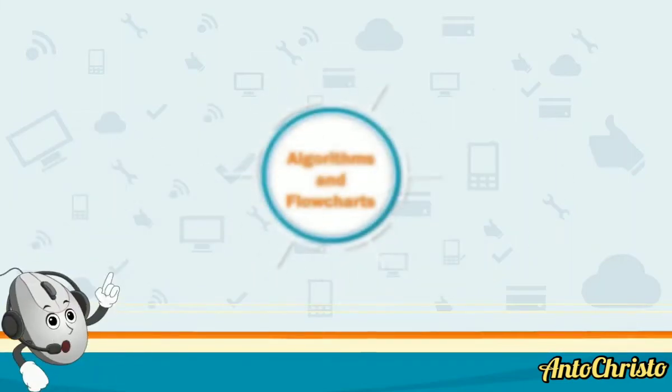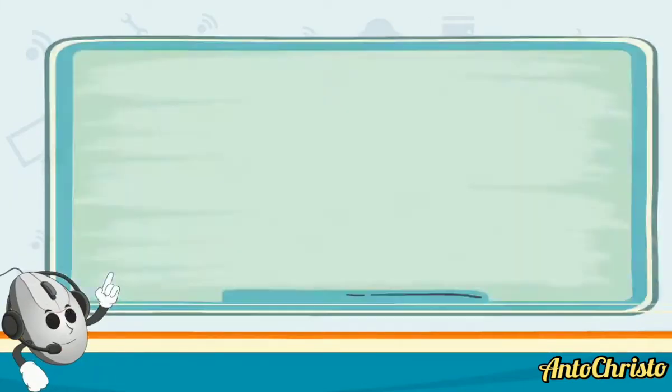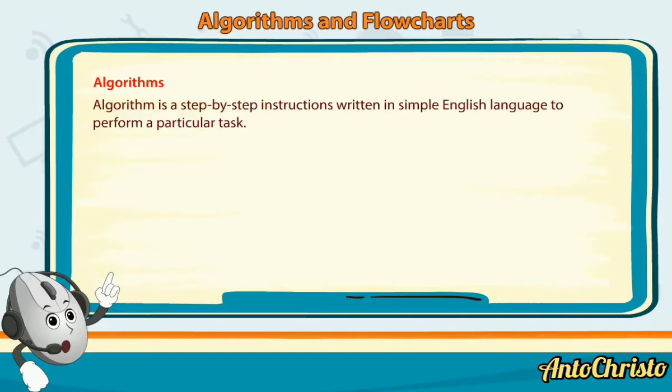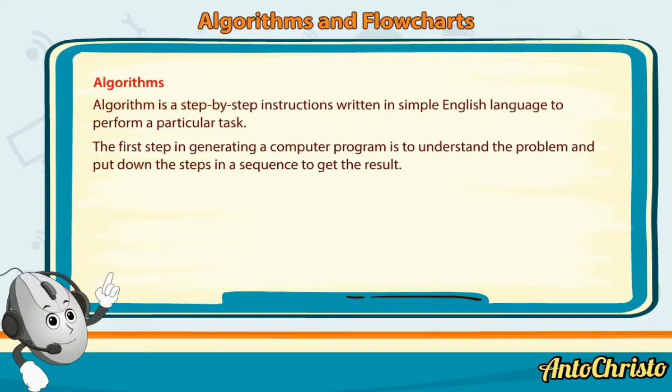Algorithms and Flowcharts. Algorithm is a step-by-step instructions written in simple English language to perform a particular task. The first step in generating a computer program is to understand the problem and put down the steps in a sequence to get the result. Let's understand the concept of algorithm by taking a real-life situation.